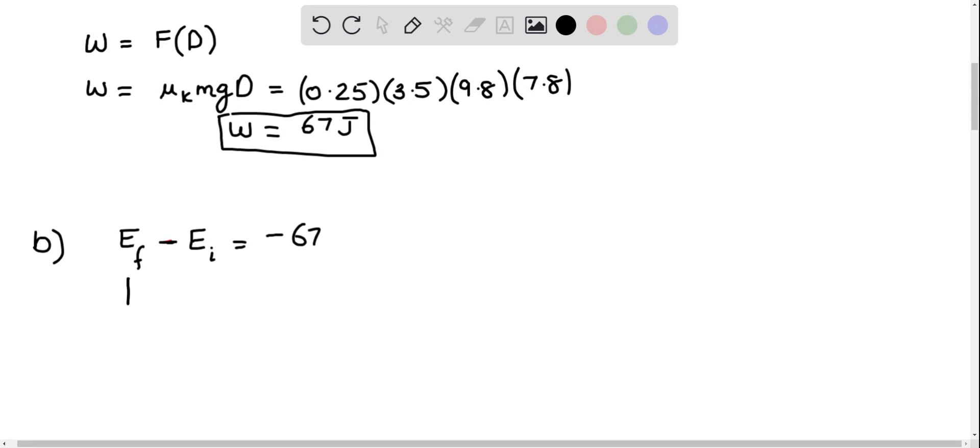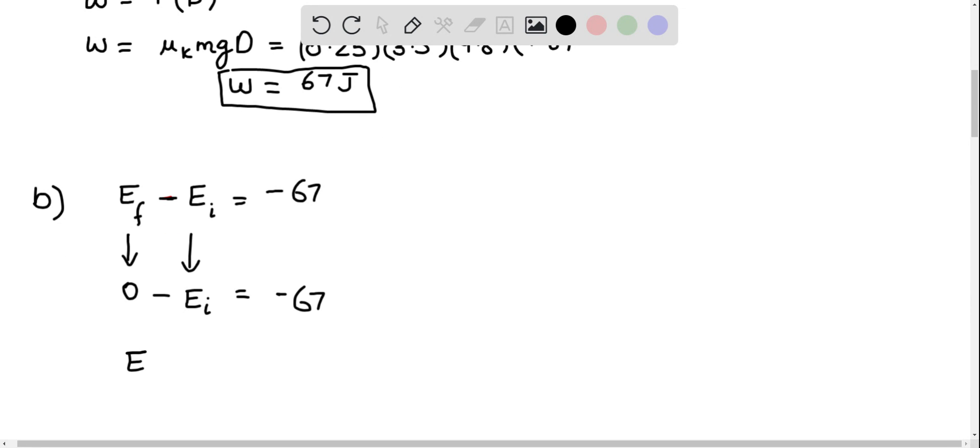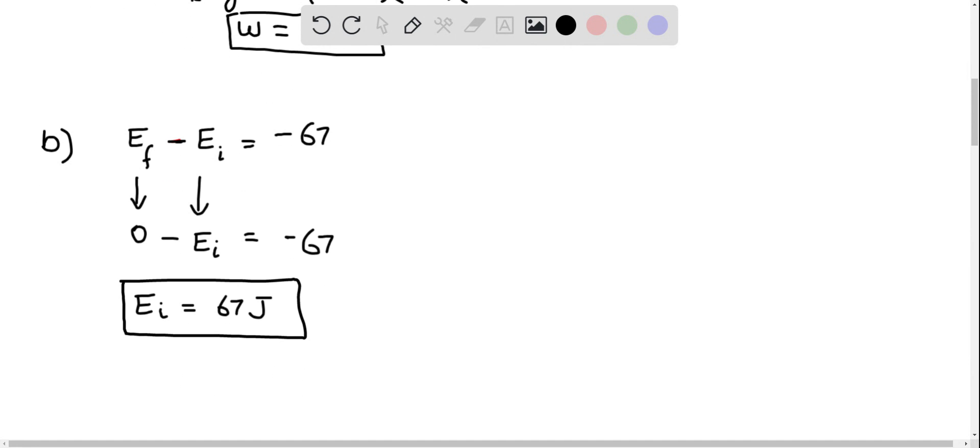So our final energy is actually equal to zero, because there is no kinetic energy and there is no potential energy. And that gives us negative E sub i equals negative 67 joules, and that gives E sub i equals 67 joules. And that is the answer for part B.